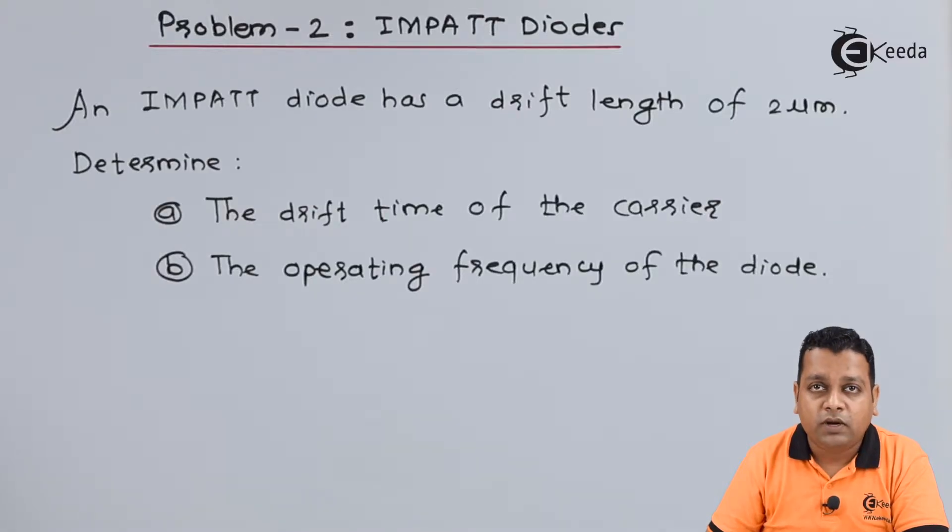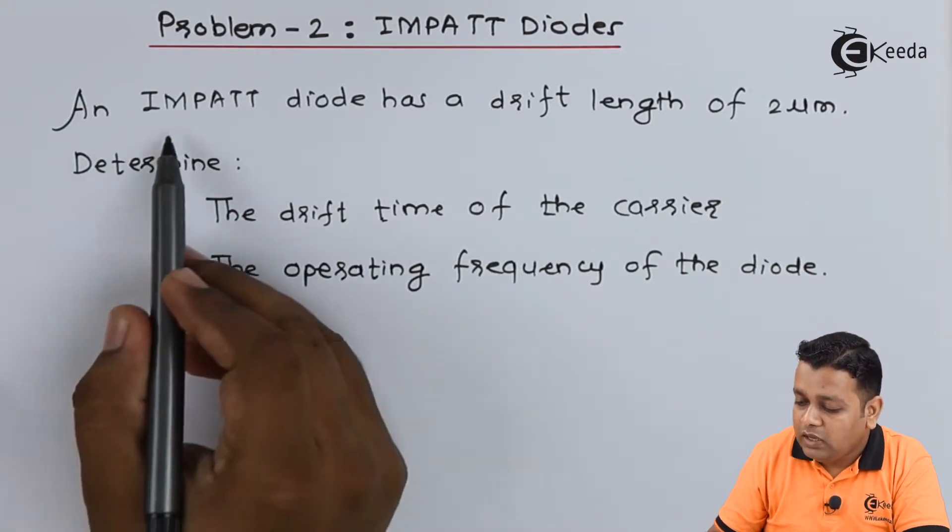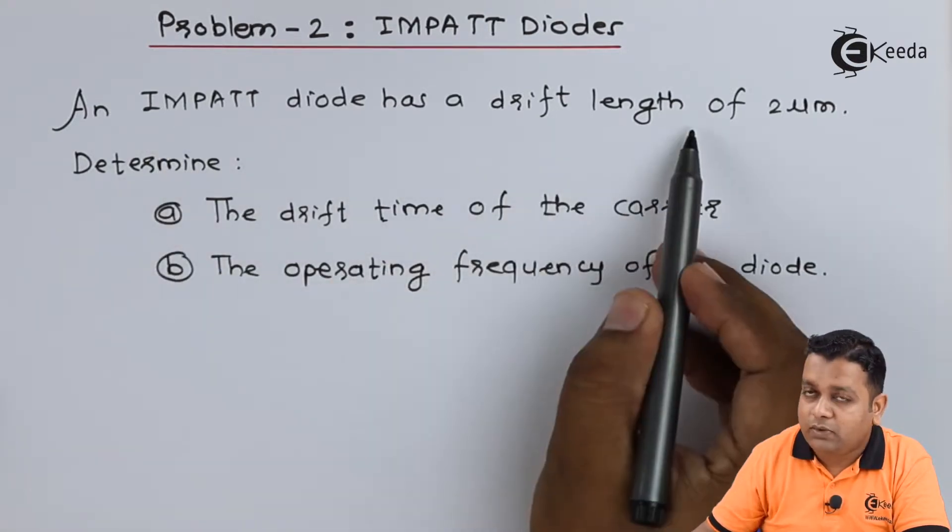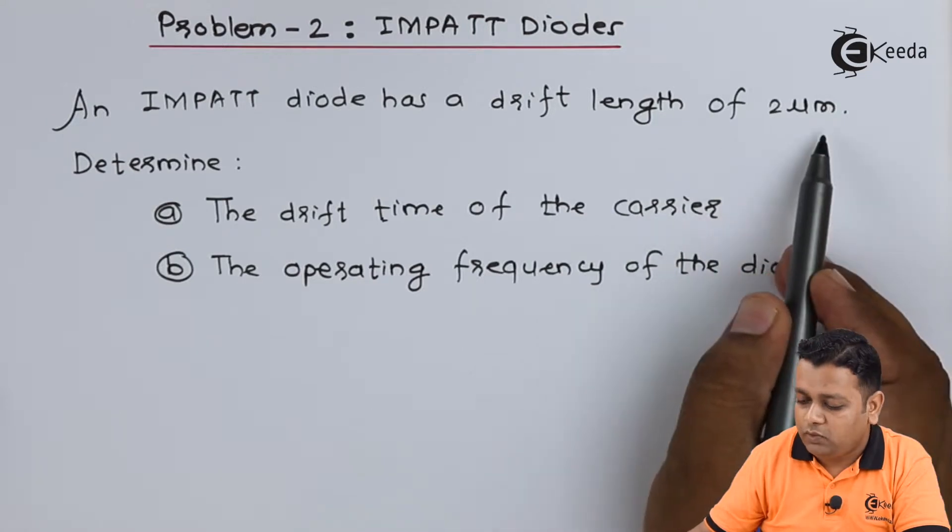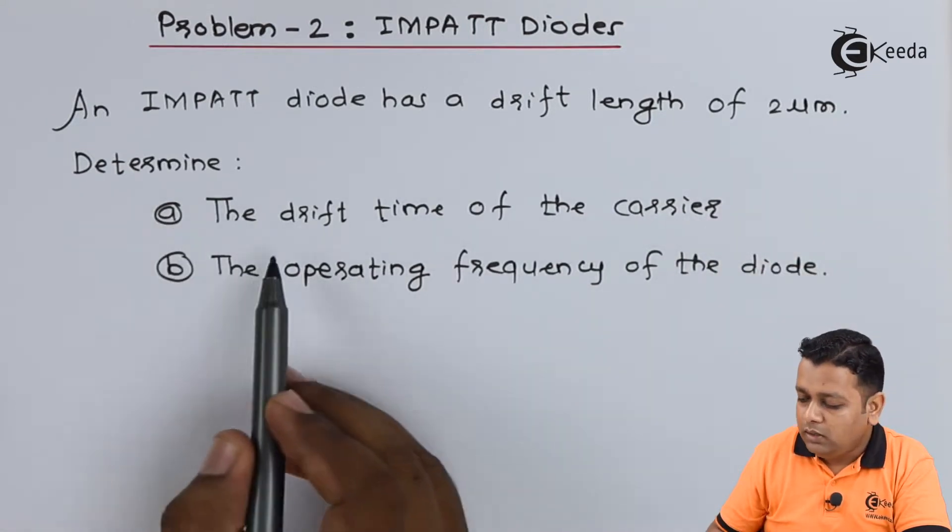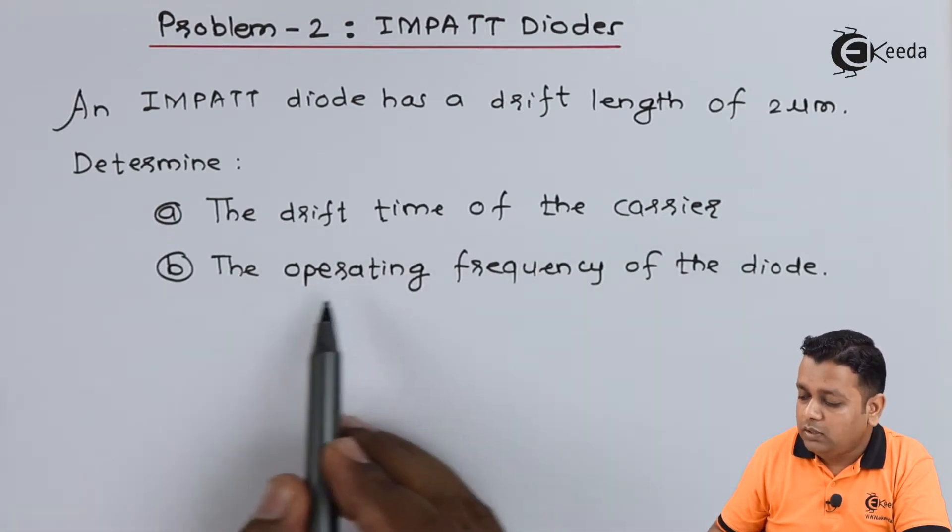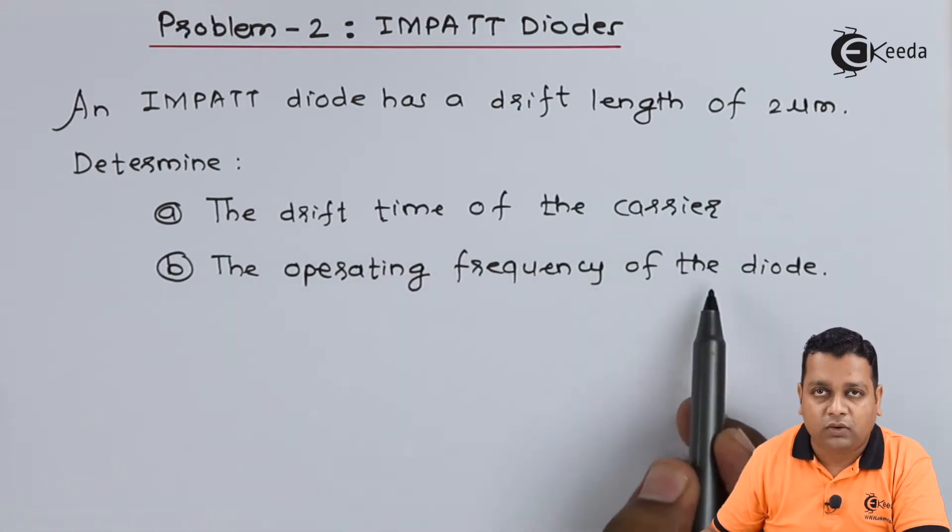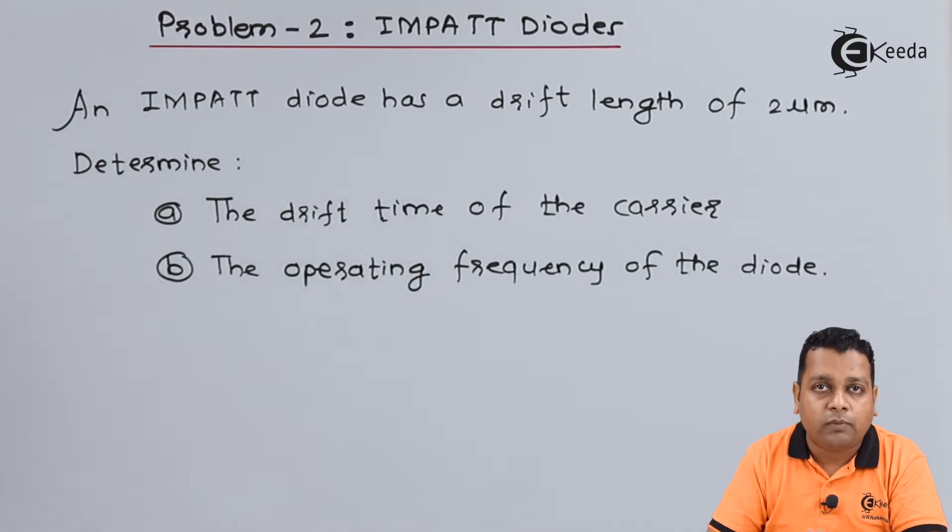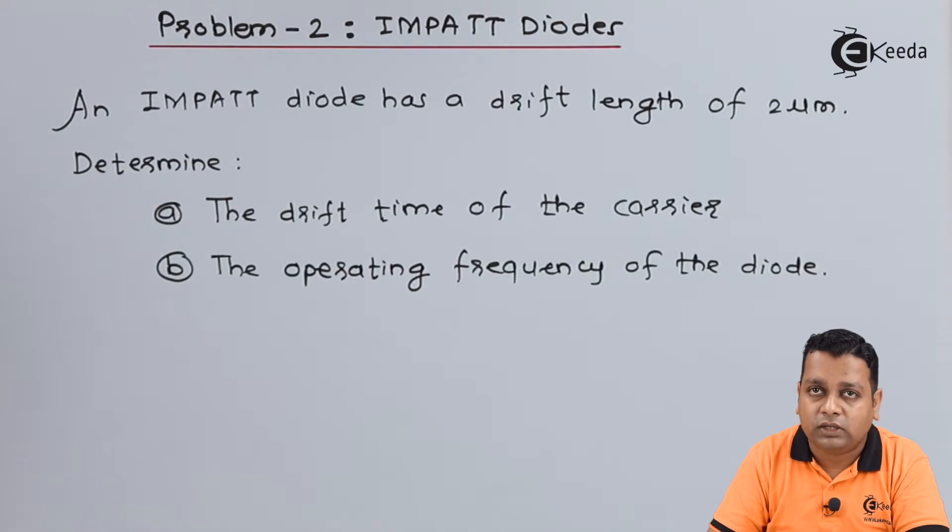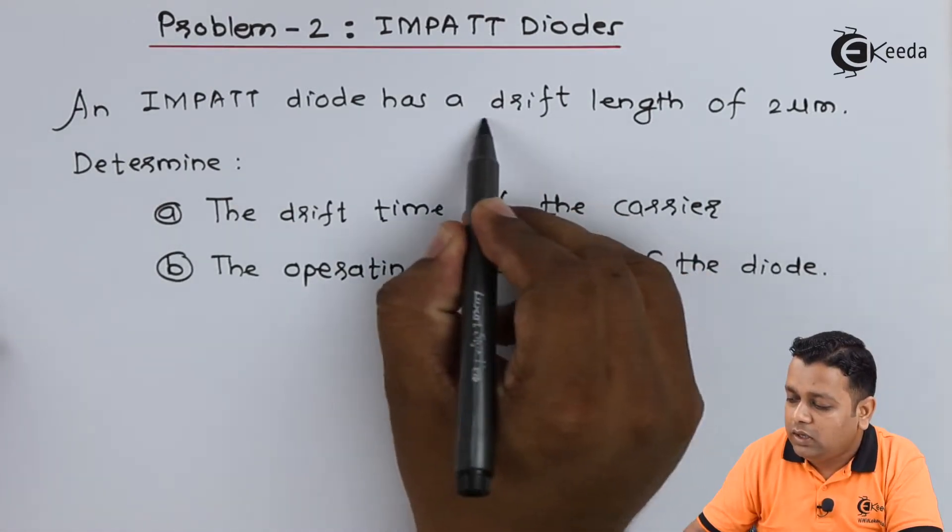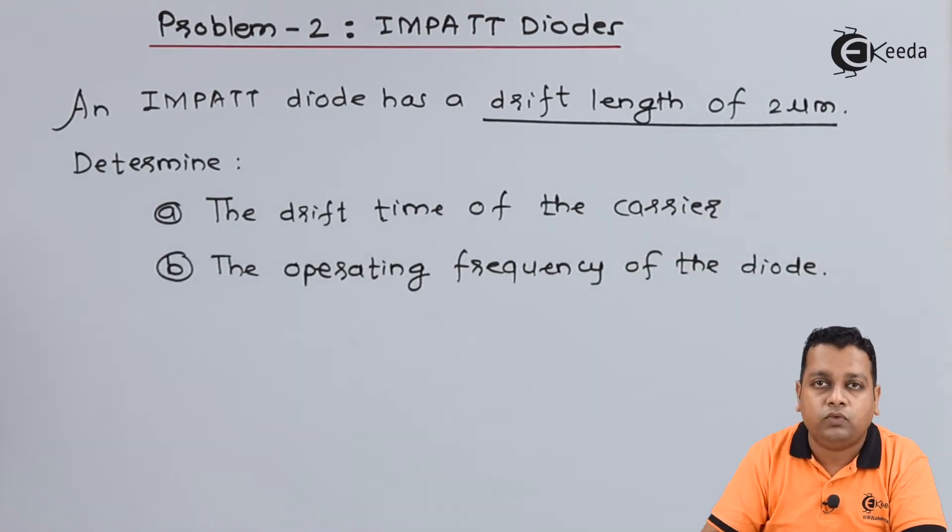A problem statement with respect to the IMPATT Diode is given to us. An IMPATT Diode has a drift length of 2 micrometers. Determine in part A the drift time of the carrier, and in part B the operating frequency of the diode. To see the problem statement, it is very short and straightforward. Only one value is given to us - the drift length of 2 micrometers.